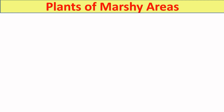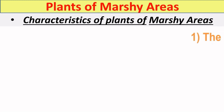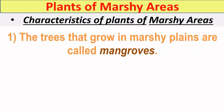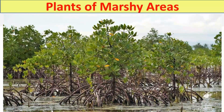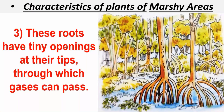Now let's talk about the plants of marshy areas, where marshy means muddy area. The trees that grow in marshy plains are called mangroves, and the roots of mangroves grow above the soil so that they can breathe in air. These types of roots are known as breathing roots. As you can see in this picture, the roots grow above the soil. These roots have tiny openings at their tips through which gases can pass easily.